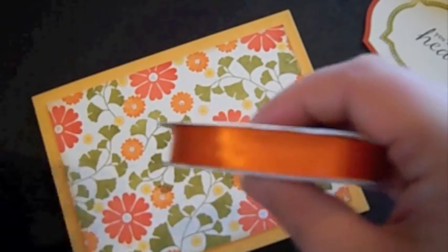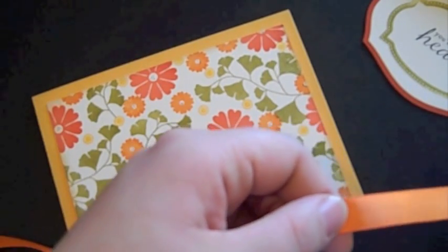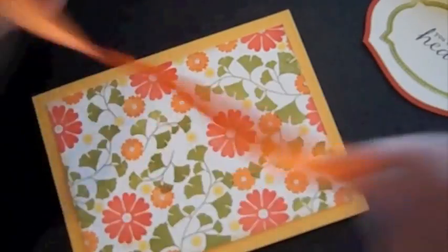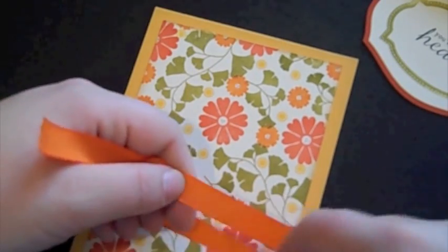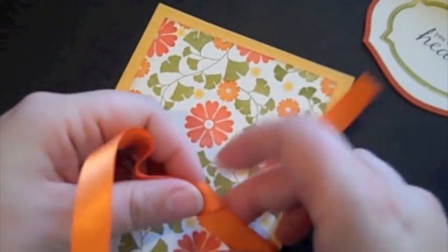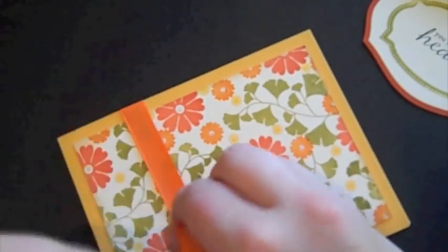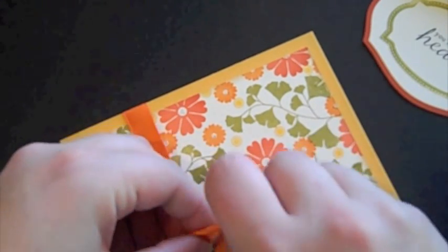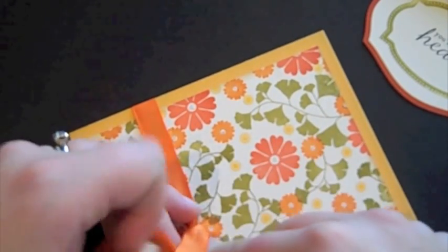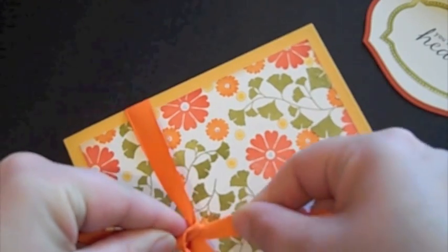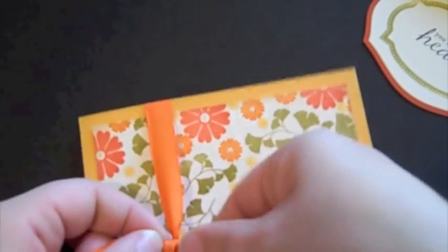And now I'm going to take Orange Zest satin ribbon, just a long piece of this. And I'm going to tie this around. I'm actually using it upside down, the non-shiny side facing up. And I'm just going to tie this in a very simple knot. I like to try to get everything organized before I tie the knot, pull it tight, make sure everything is facing the way that I would like it.